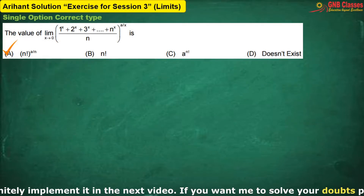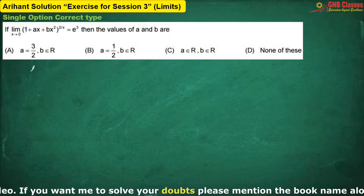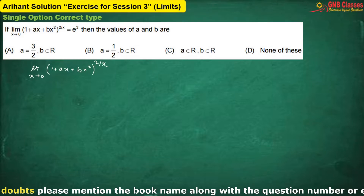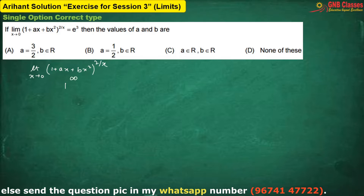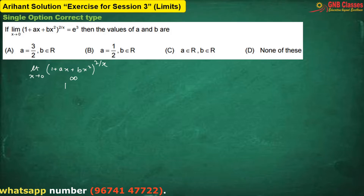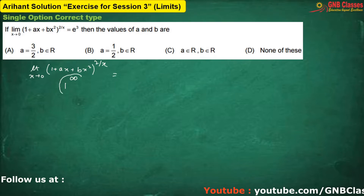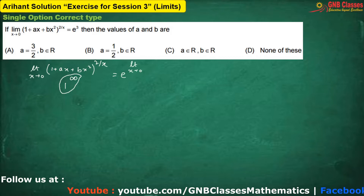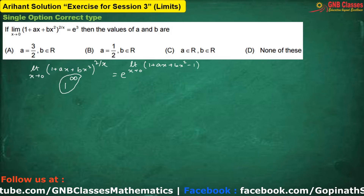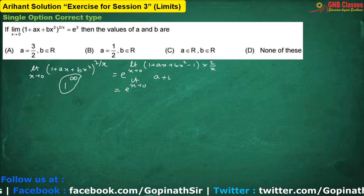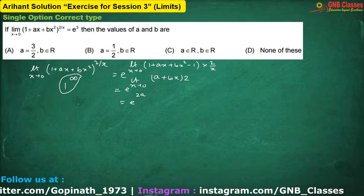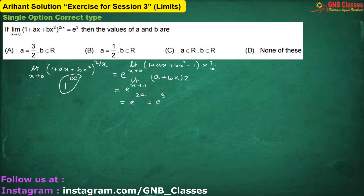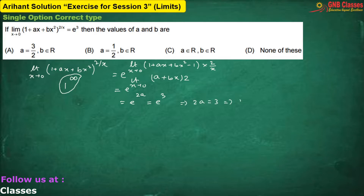Let us move to the next problem. Just consider the left-hand side part. If I put x equals to zero, we are going to get one to the power infinity. We are getting one to the power infinity form. So I am applying the same power limit theory explained in the previous sum. This limit can be written as e to the power: limit x tends to zero of (f(x) minus 1) times g(x). They have said that this equals e cubed. So from here we are getting 2a equals 3, which implies a equals 3/2.